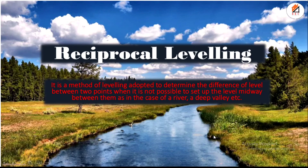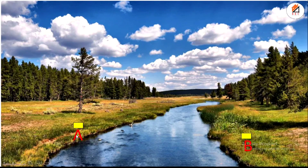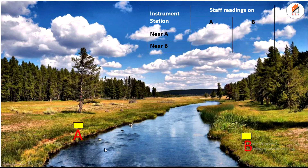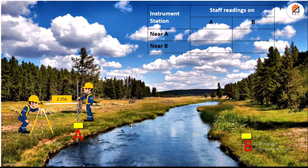Here we have considered a river as an example, and we have points A and B on two banks. First, we place the instrument at A and take the staff reading at A, then the staff reading at B. The reading obtained here is 2.156.